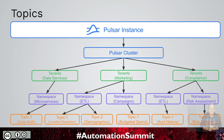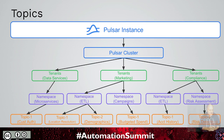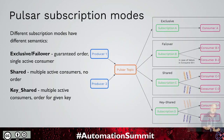You can have one instance of Pulsar with one cluster, potentially geo-replicated somewhere else. Tenants can be set up — maybe one for each group within your company, like marketing. They can have their own namespaces and topics. This avoids long, complex names and allows for a very large number of topics without confusion.